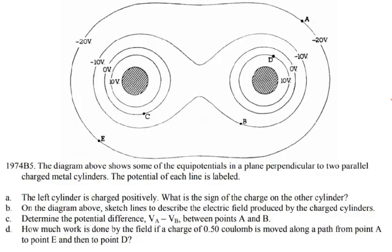Coming back to our problem: the left cylinder is charged positively. What is the sign of the charge on the other cylinder? You can see that both cylinders are charged positively. You can tell because the potential difference starts at positive 10 volts, then zero, then negative 10, then negative 20 — the same pattern on both sides, sharing the same zero-volt line. Both must be positive because the potential starts positive and decreases outward.